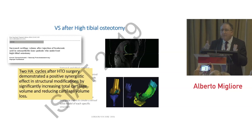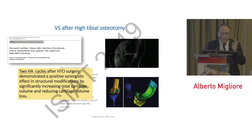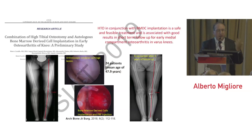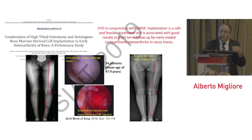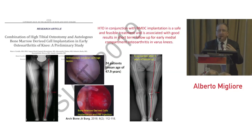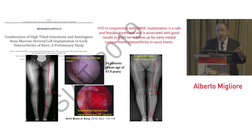The dosage and number of cycles of intra-articular treatment are very important in order to show a structural modification, as demonstrated in that study. Another study examined the combination of high tibial osteotomy and autologous bone marrow-derived cell implantation in early osteoarthritis, showing the surgery combined with bone marrow cell implantation is safe and associated with good short-term results. There is also an opportunity immediately after surgery that we should investigate as a window of opportunity, and we must study how long this effect lasts.